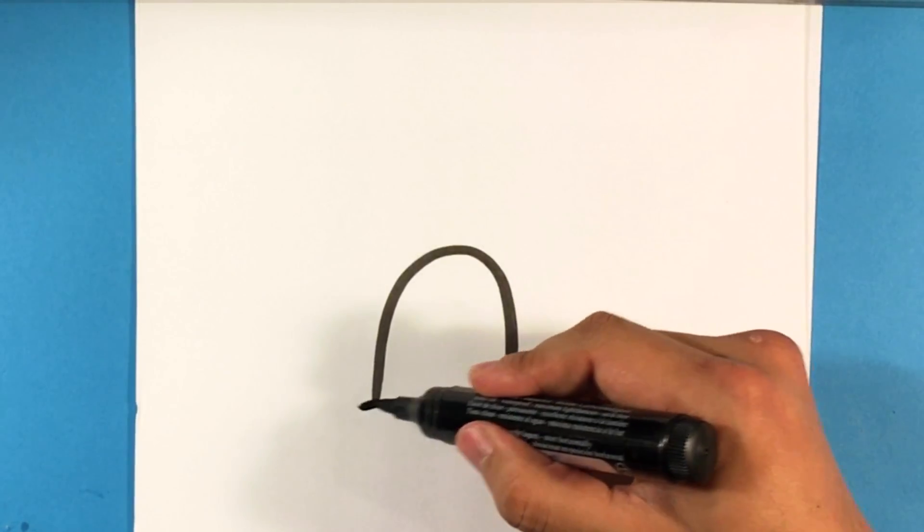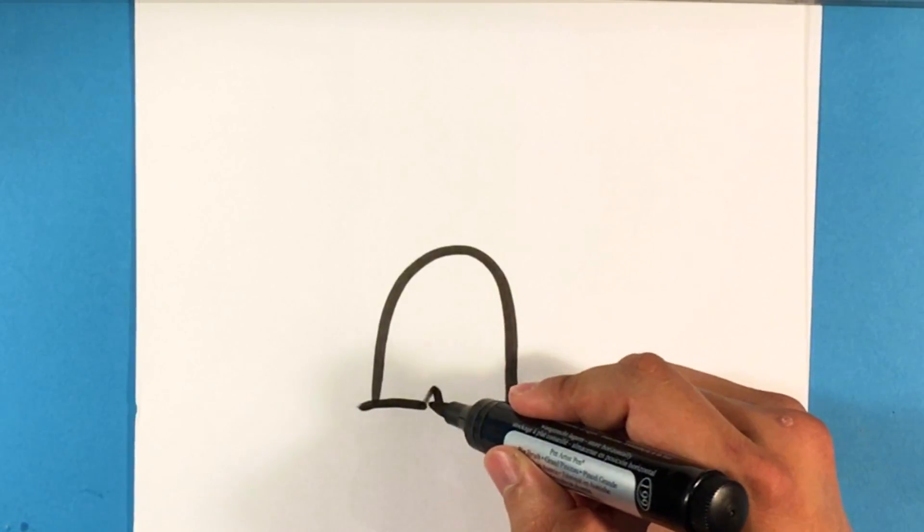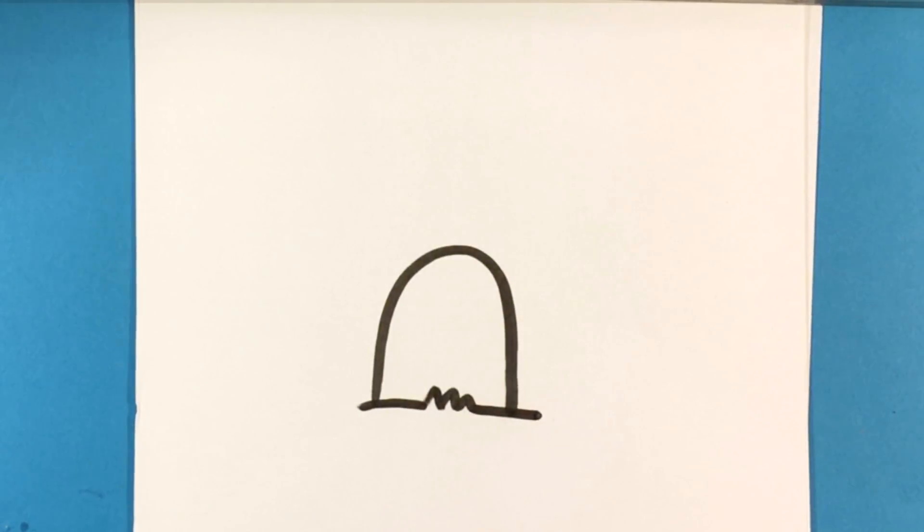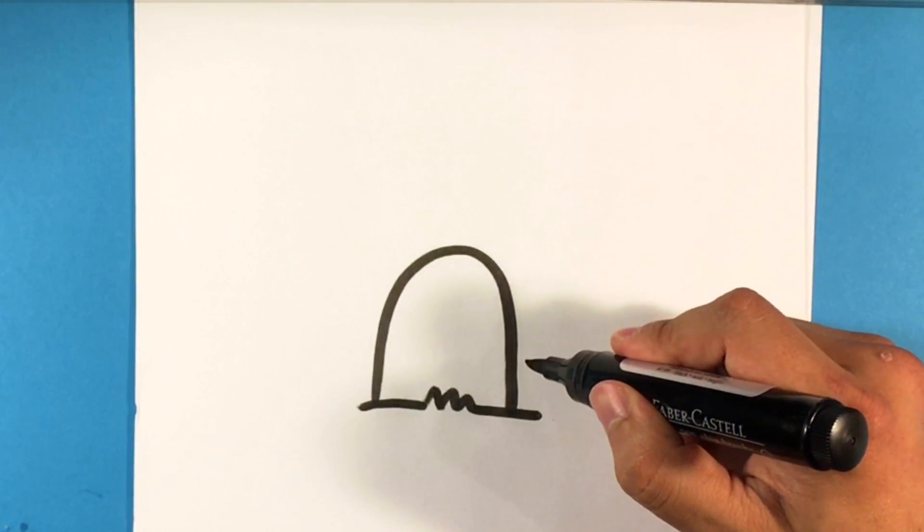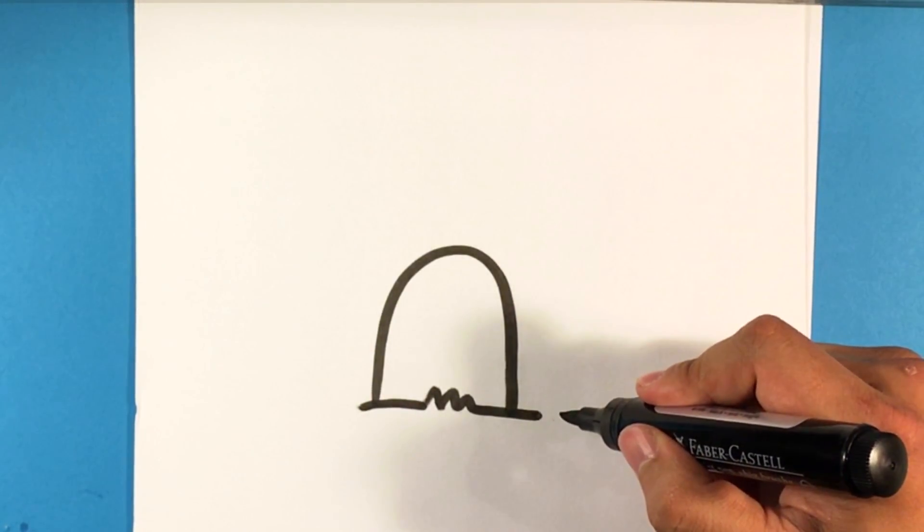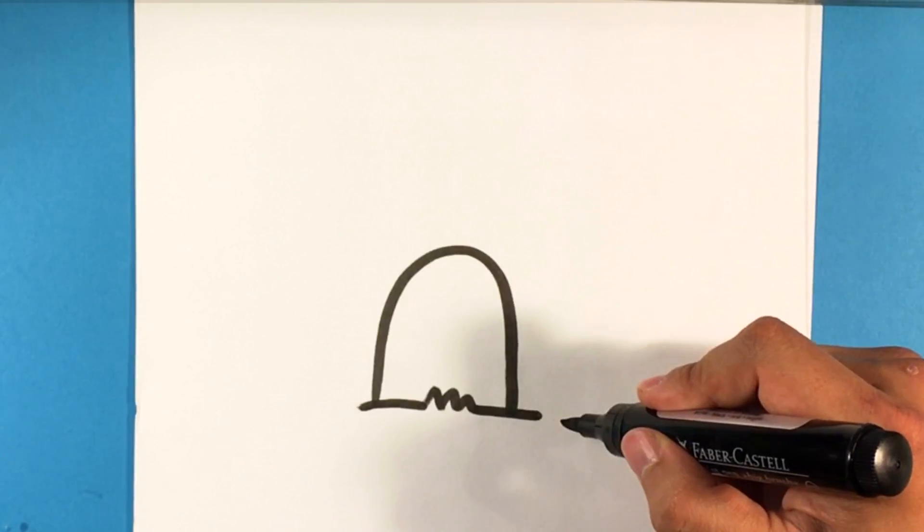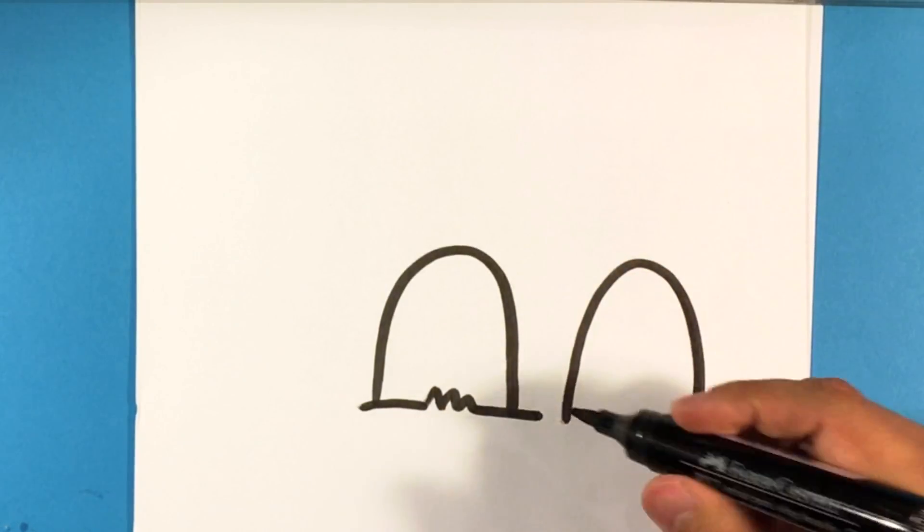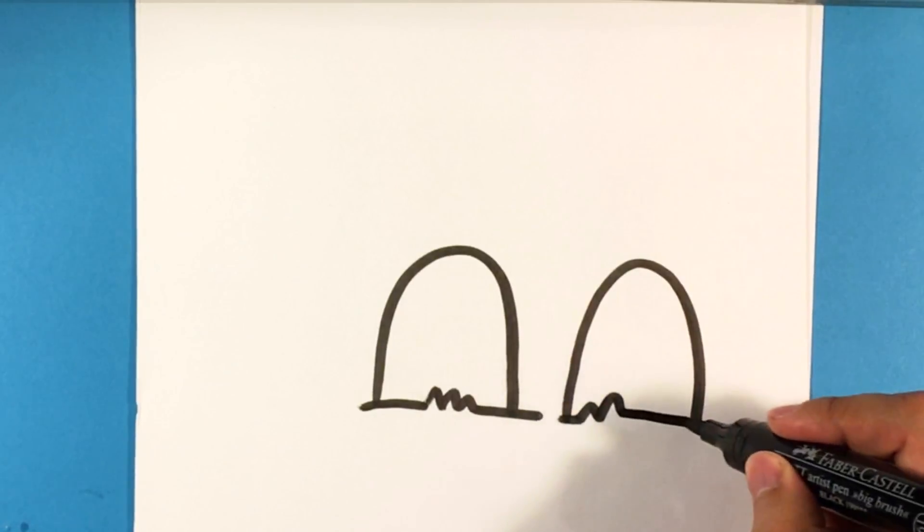So we're going to start with a hump there, go across it, put some grass, and we're going to draw another one over here. Well yeah, let's draw another one right here next to it. Maybe a different grass as well.